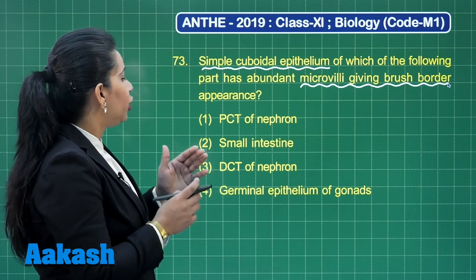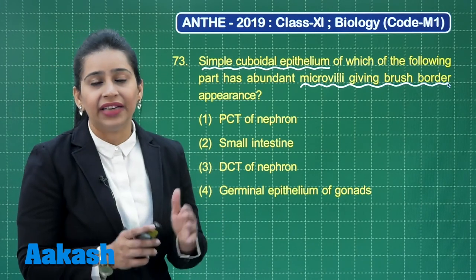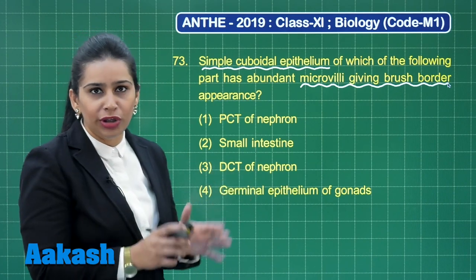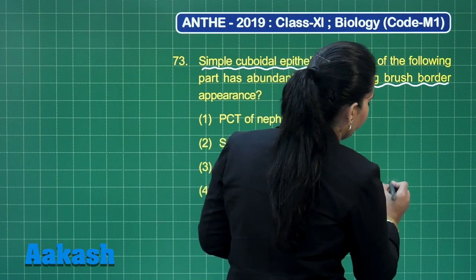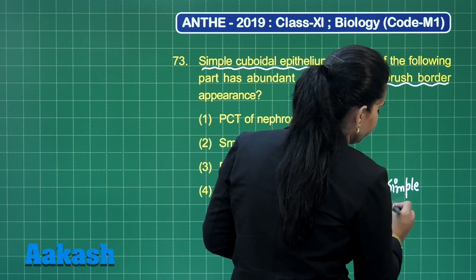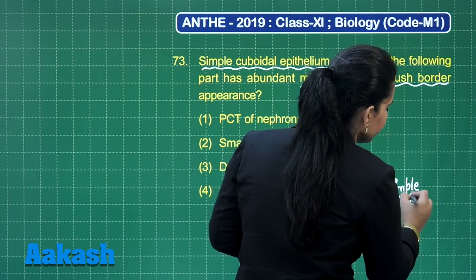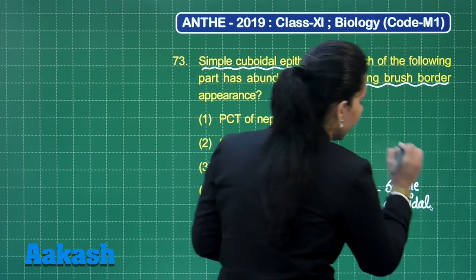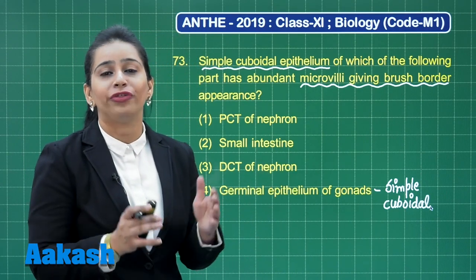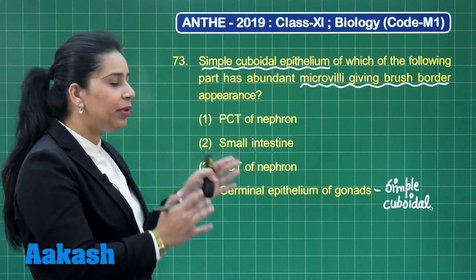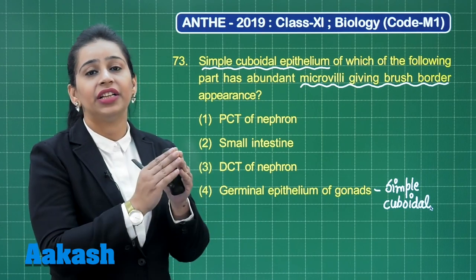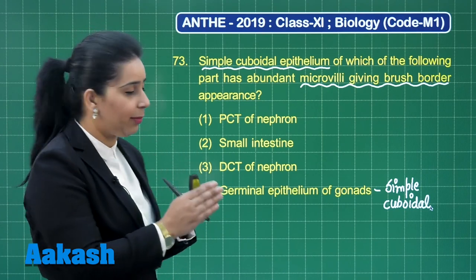If we look at the germinal epithelium of gonads, there is no need to increase the surface area for absorption, so the fourth option is ruled out clearly — it also consists of simple cuboidal epithelium but not the brush-bordered type. The PCT of nephron, small intestine, and DCT of nephron are all concerned with absorption of substances, so microvilli can be present. The PCT of nephron has brush-bordered cuboidal epithelium.